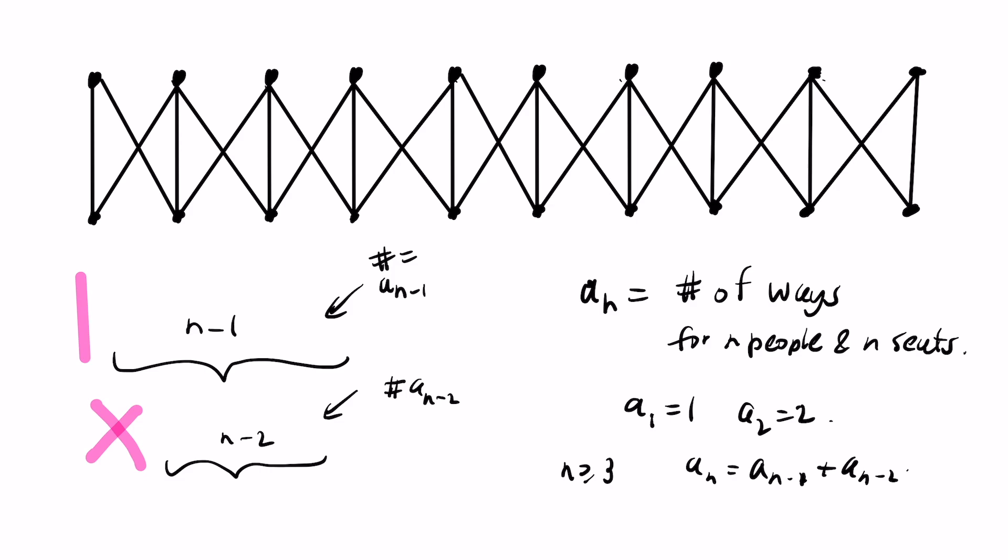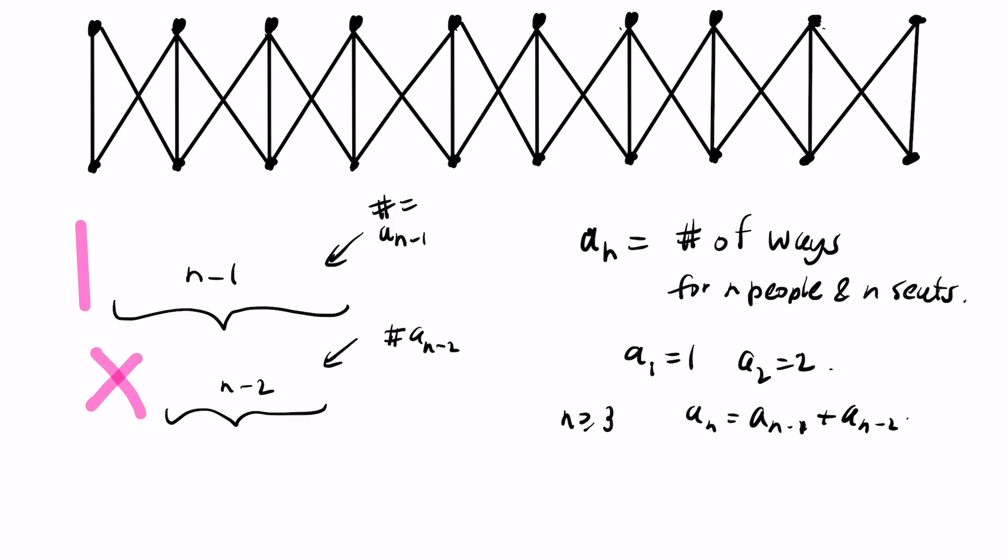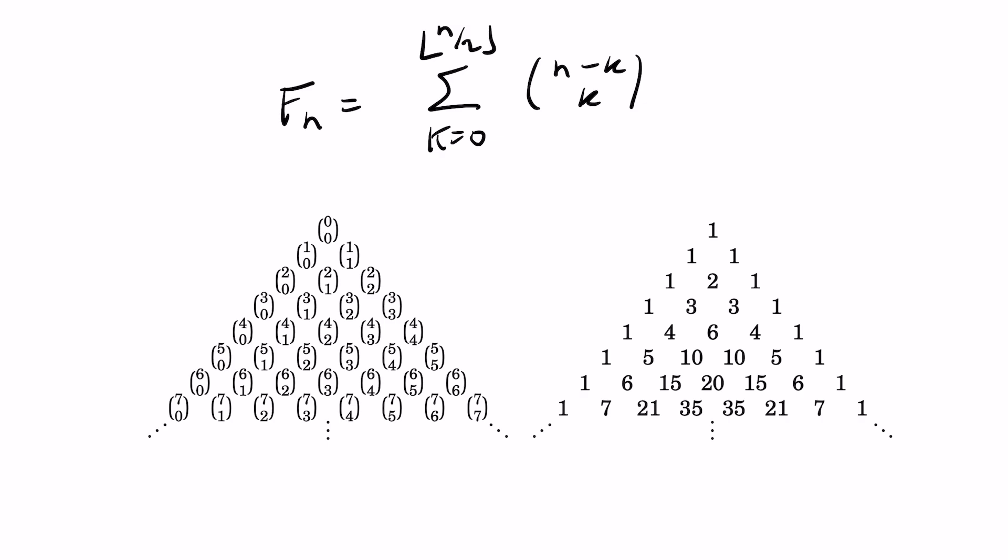If we start actually expanding and computing these numbers, we'll get exactly the Fibonacci sequence. Every number is the sum of the two numbers before it. Okay, so this begs a question. The Fibonacci numbers now count this number of matchings. But at the same time, we had a formula for this in terms of the sum of binomial coefficients. So doesn't that mean those two things are the same? Yes, indeed it does.